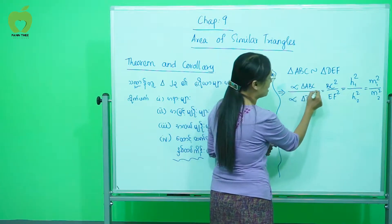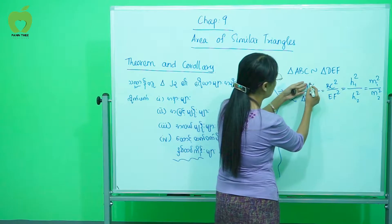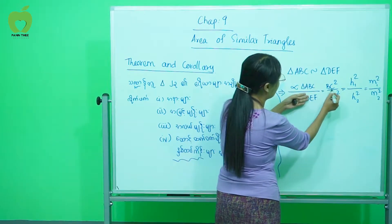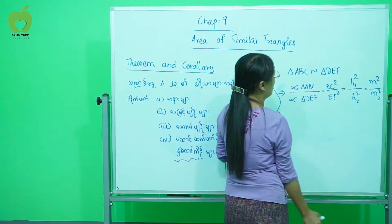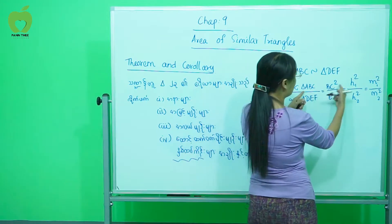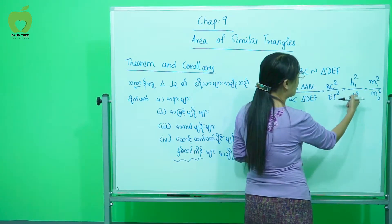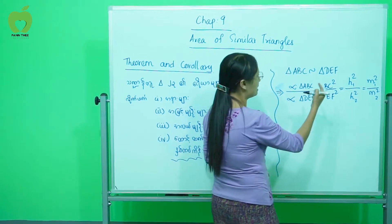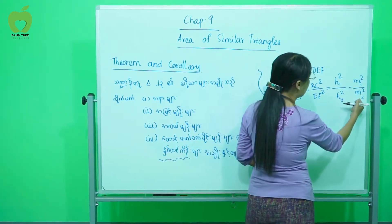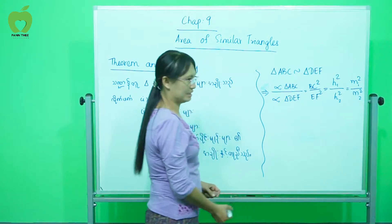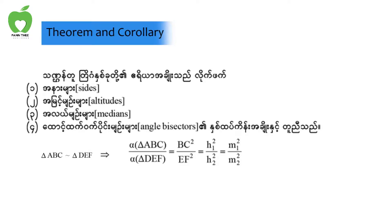So you can see H2, H1 square, H2 square, and M2 square. If you have M1 square, M2 square, then you can see what happens.